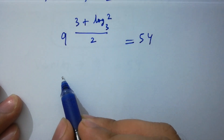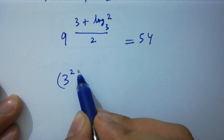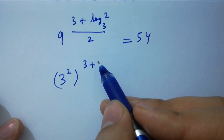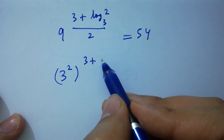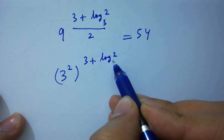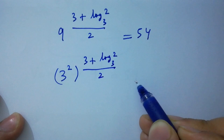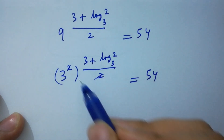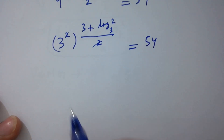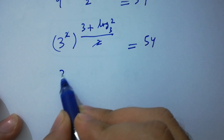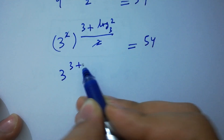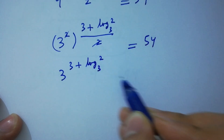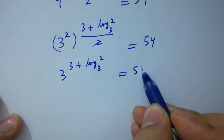As 9 is 3 squared: (3 squared) to the power (3 plus log₃2) over 2 equals 54. The 2s cancel, giving 3 to the power (3 plus log₃2) equals 54.